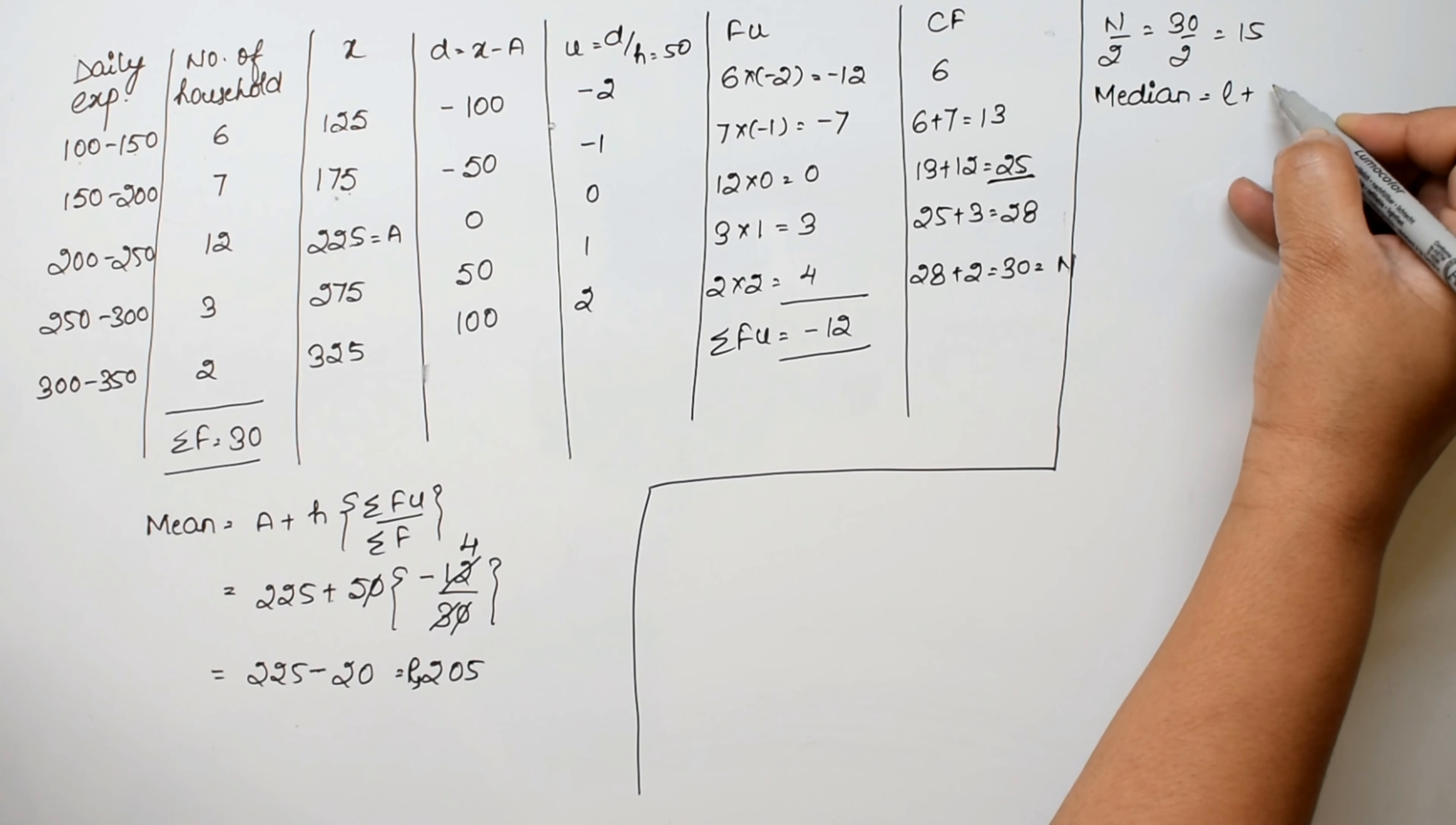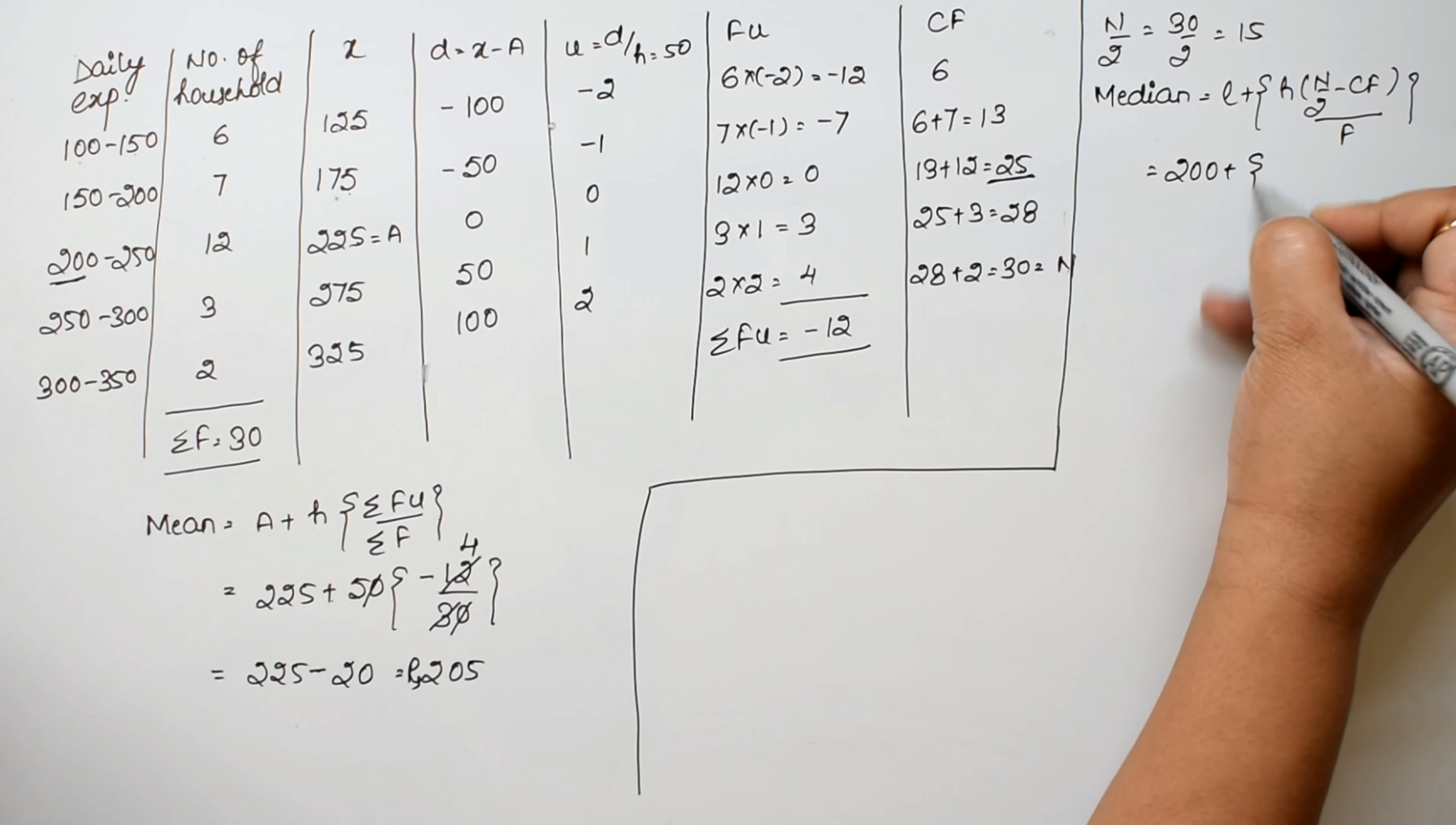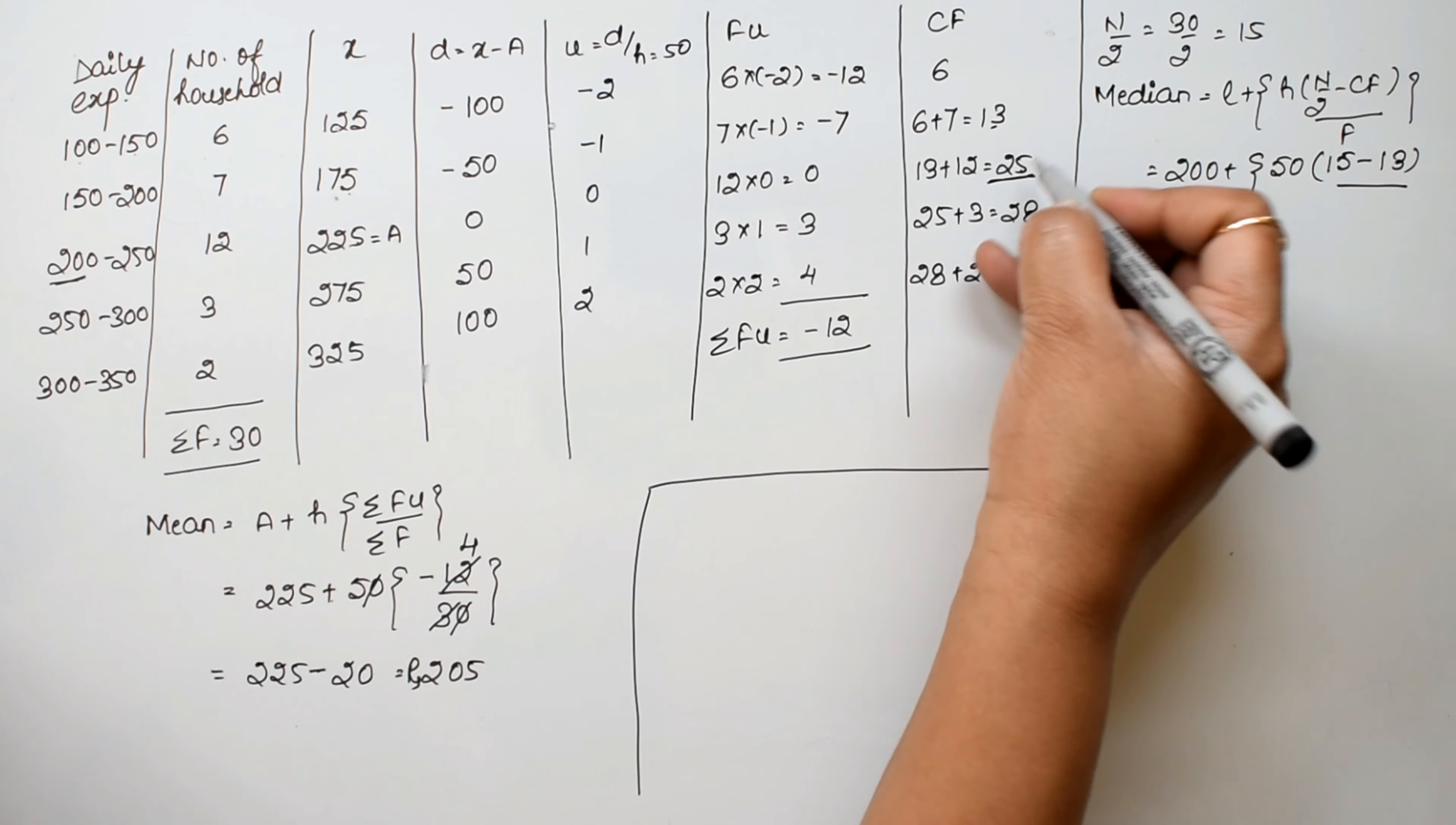The median formula is: L plus h into (n/2 minus cumulative frequency) upon frequency. The lower limit is 200. H is 50. N by 2 is 15. The cumulative frequency before the median class is 13, and the frequency is 12.